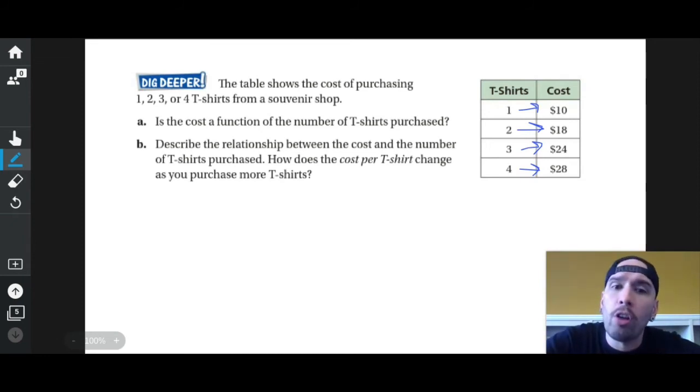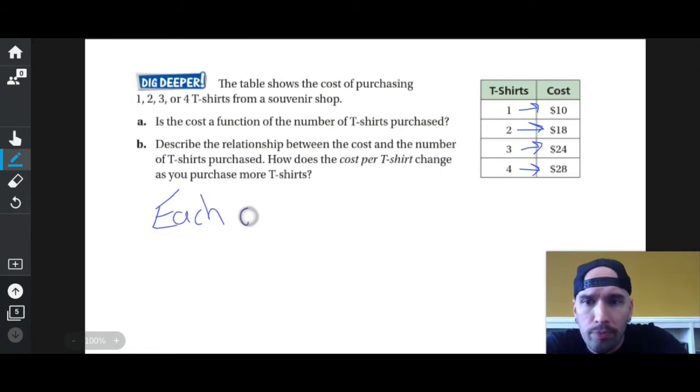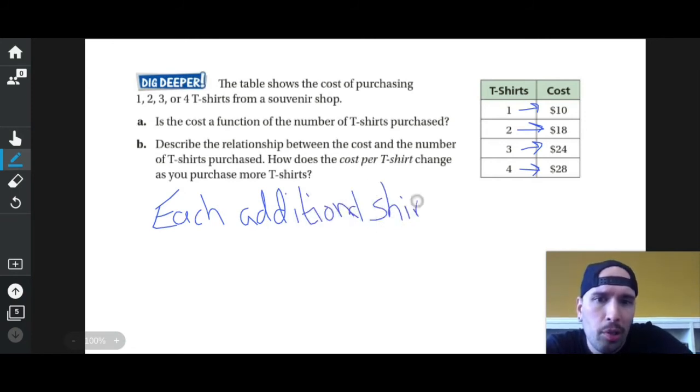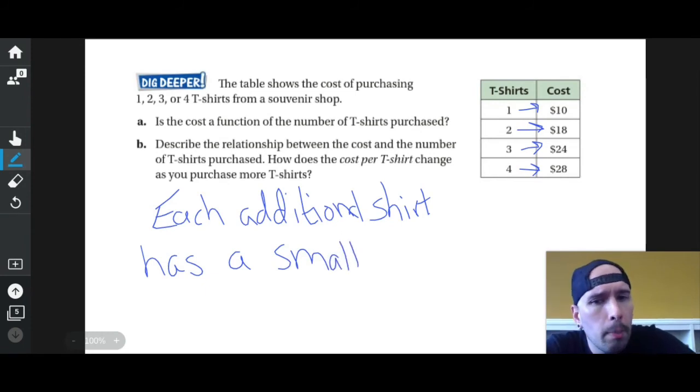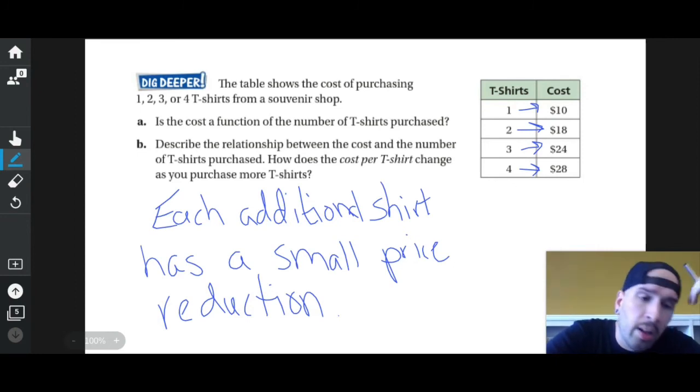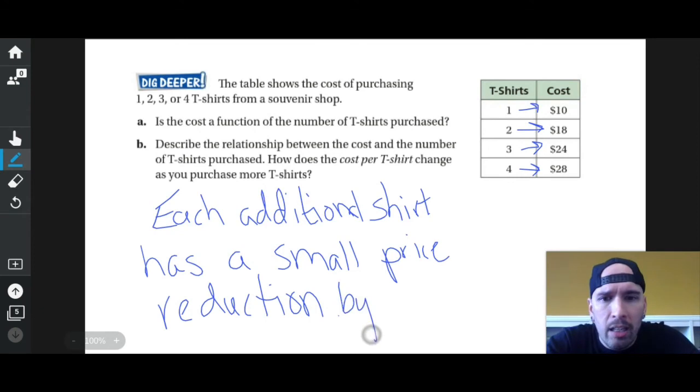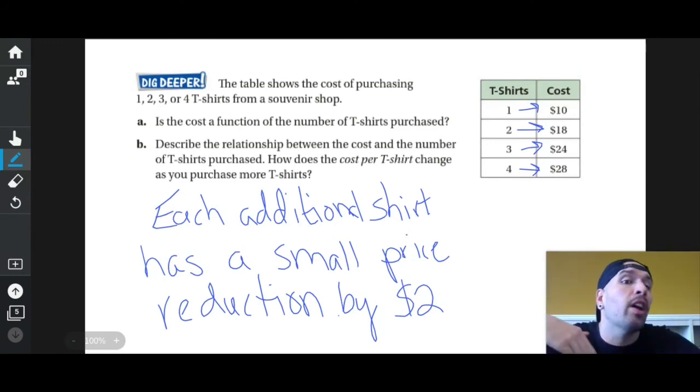Okay, well it actually asked me that. How does the cost per t-shirt change as you purchase more shirts? Each additional shirt has a small price reduction by $2. So it went up $8, and then it went up $6, and then it went up $4. So one shirt I paid $10, and then I only had to pay $8 more, and then I only had to pay $6 more, and then I only had to pay $4 more. Okay, that's it. Functions, relations, nothing crazy there, nothing wacky about it. Easy peasy, t-shirt sleazy, t-shirt sleevesy. I just made that up, I'm so good.